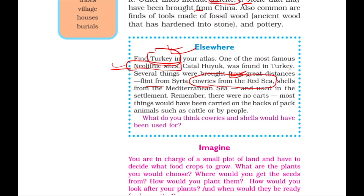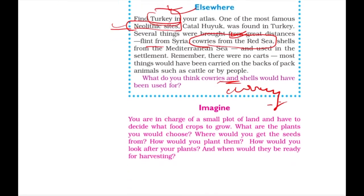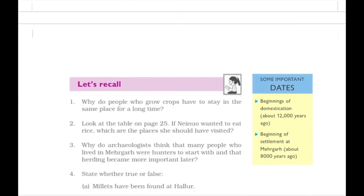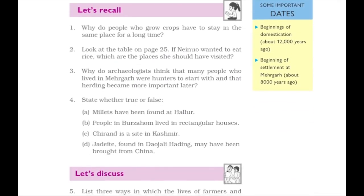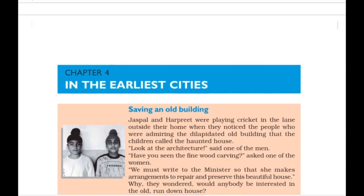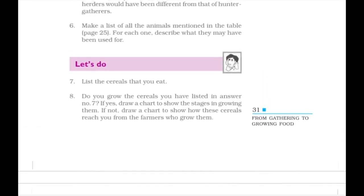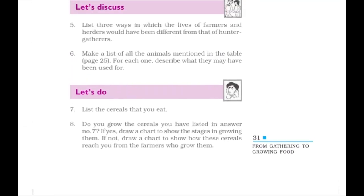Kauri shells from the Red Sea were used as currency in later medieval times. The important dates to remember are: beginning of domestication — 12,000 years ago; beginning of settlement at Mehergarh — 8,000 years ago. This is the end of Chapter 3, and we will be continuing with Chapter 4. Thank you.